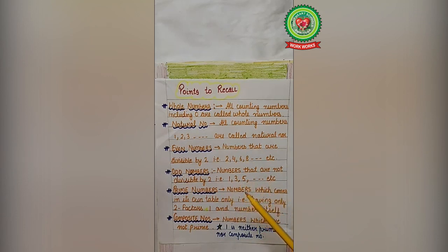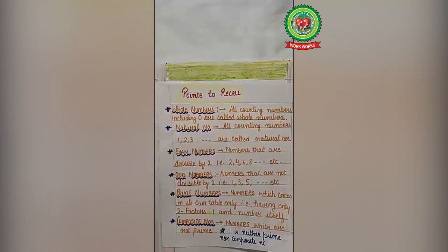Prime numbers: numbers which comes in its own table only and having only two factors, these are 1 and number itself. Composite numbers: numbers which are not prime are known as composite numbers. Now here prime numbers are 2, 3, 5, 7, 11, so on. And which are not prime, they are composite numbers. Now remember, one is neither prime nor composite number.